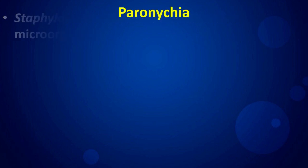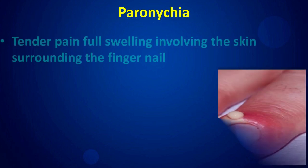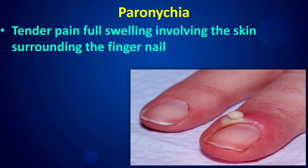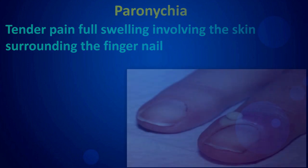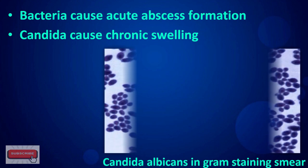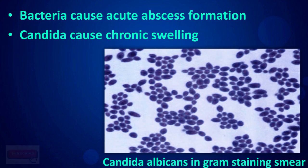Paronychia is a tender, painful swelling involving the skin surrounding the fingernail. Bacteria cause acute abscess formation, while Candida causes chronic swelling.